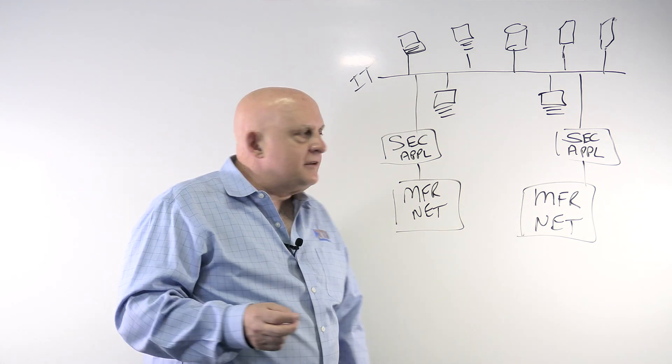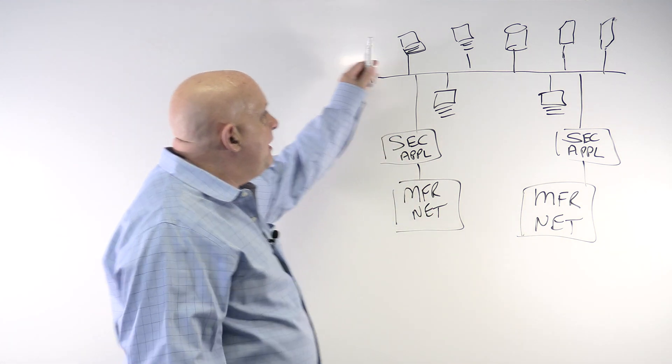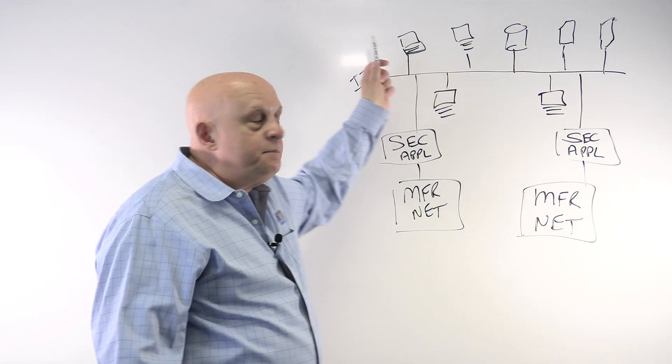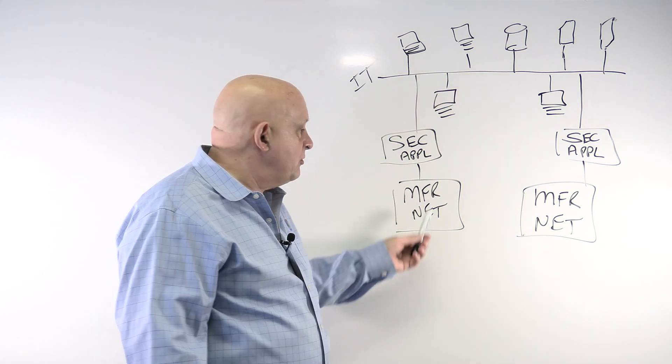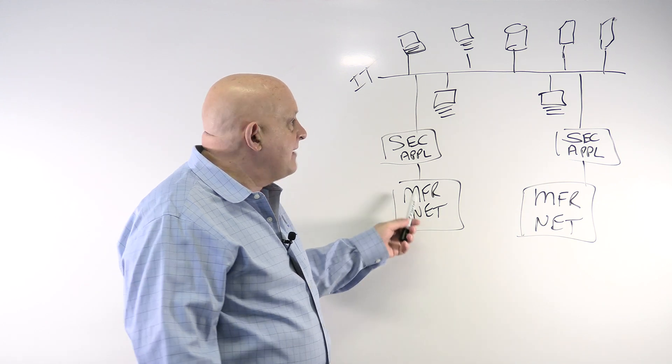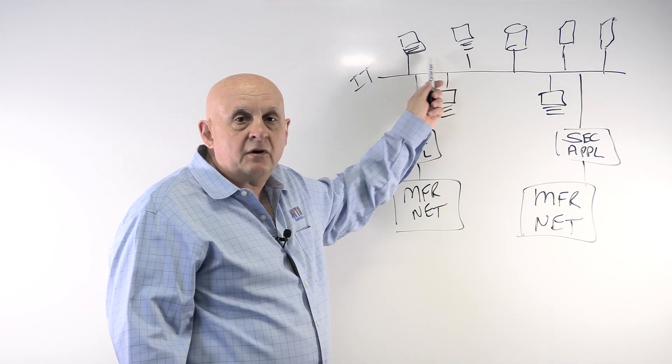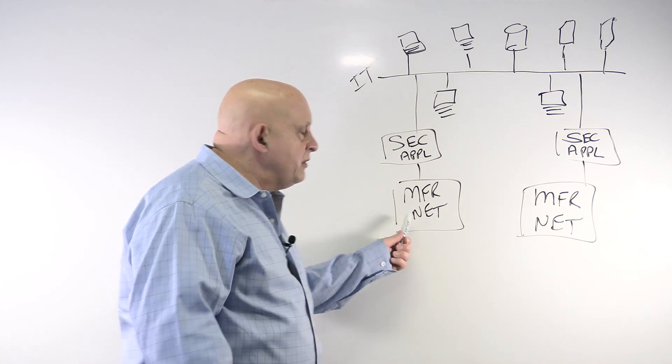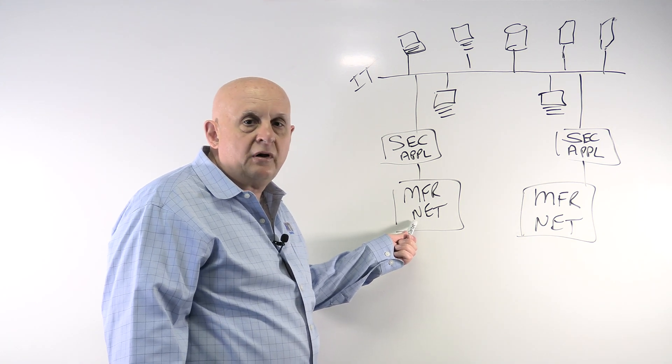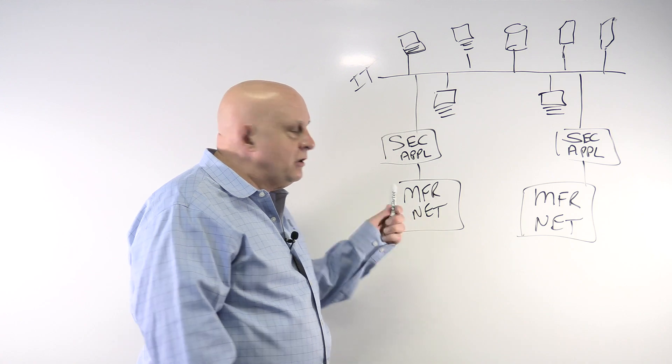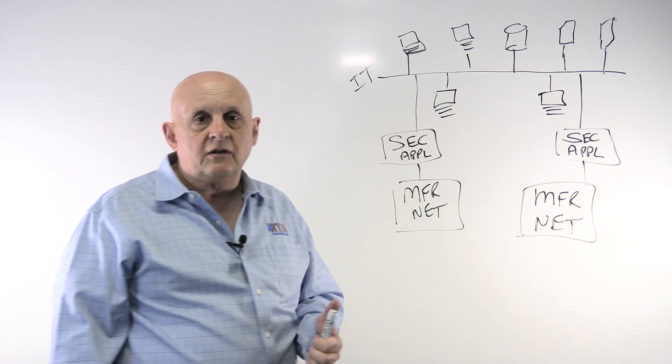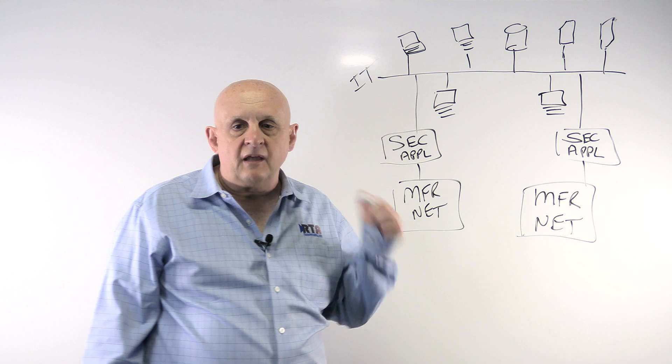The first one is that protecting these manufacturing networks is the job of the IT department. No, no, no. They've got plenty to do trying to manage this massive corporate network. They might be interested in helping you, they certainly want this to be protected, but really that's not their job. Their job is up here on this. As a manufacturing engineer, you're responsible for making sure that this system is operating at 100% effectiveness. That includes protecting it. It's the job of a manufacturing engineer to do cybersecurity on the manufacturing floor, not the IT department.